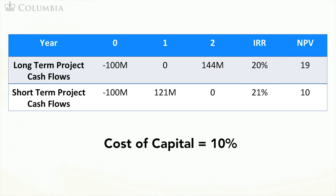What is going on? The IRR is the return you obtain in a project per period. By investing in the short-term project, you earn a 21% return over one period. By investing in the long-term project, however, you earn a lower return of 20% but over two periods. Again, focusing only on the IRR can be misleading.